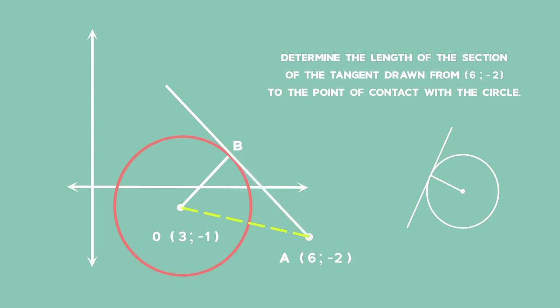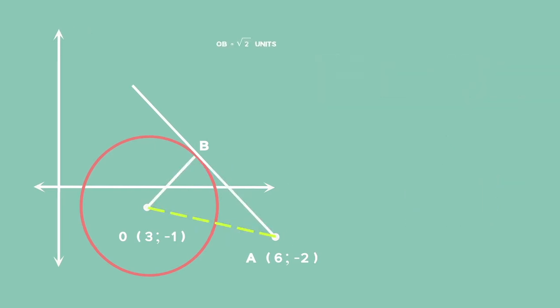Look at triangle OAB. It is right-angled because the tangent is perpendicular to the radius. We know that OB is the square root of 2 units. If we can first find the length of OA, we can use Pythagoras to find the length of AB.